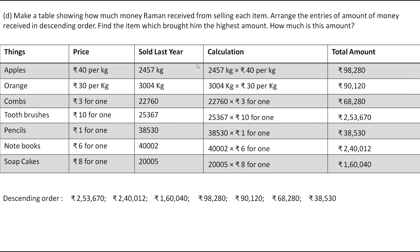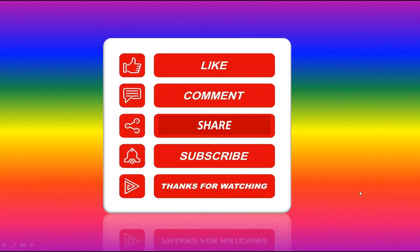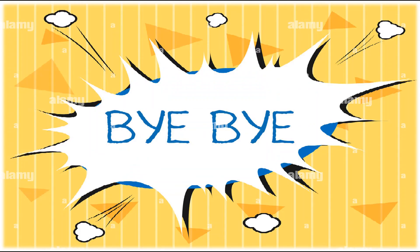The item which brought the highest amount is toothbrushes at ₹2,53,670, which is the first number in descending order — the greatest amount. That is two lakh fifty-three thousand six hundred seventy. Today's video ends here. If you like my teaching please like, share, and subscribe to my channel. Thanks for watching. Bye everyone.